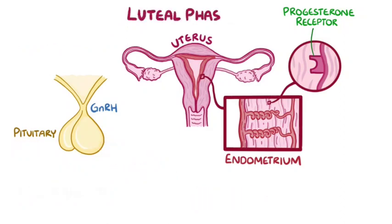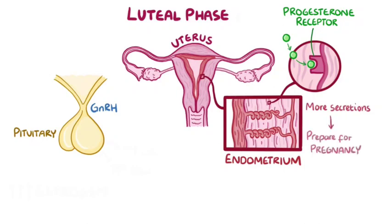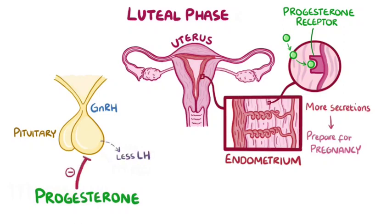During the luteal phase, progesterone binds to receptors in the endometrium and stimulates the endometrial glands to produce more secretions that prepare the uterus for a potential pregnancy. Progesterone acts as a negative feedback signal during the luteal phase, making the pituitary secrete less LH, and in turn the levels of progesterone decrease as well, and menstruation follows.